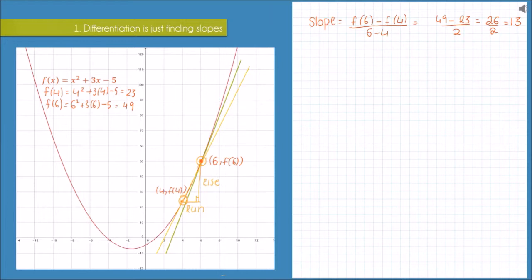So how could I get a better approximation than 13? Well, what if when I was drawing my secant line, instead of choosing the point where x equals 4, which I said was relatively close to 6, I went and chose a point a lot closer to 6. I could choose a point maybe as close as x equals 5.99.